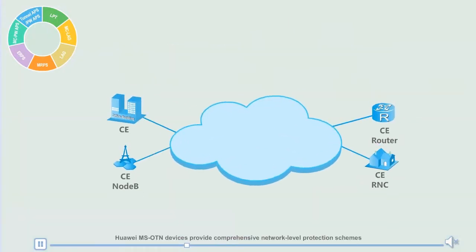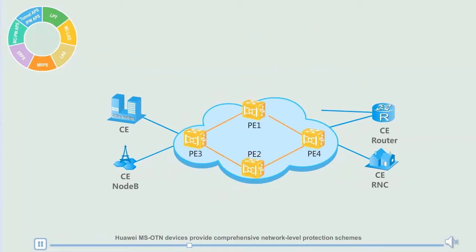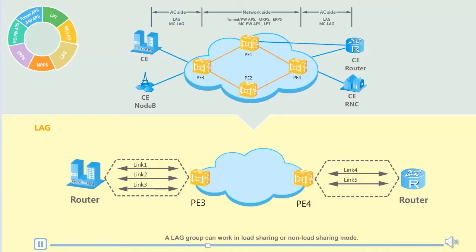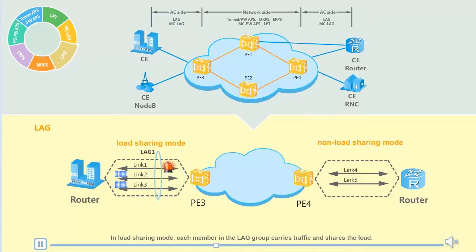Huawei MS-OTN devices provide comprehensive network level protection schemes to meet service transmission reliability requirements at the packet layer. In a link aggregation group (LAG), multiple Ethernet interfaces are bound into a logical interface to increase link bandwidth and improve link reliability. A LAG group can work in load sharing or non-load sharing mode. In load sharing mode, each member in the LAG group carries traffic and shares the load.